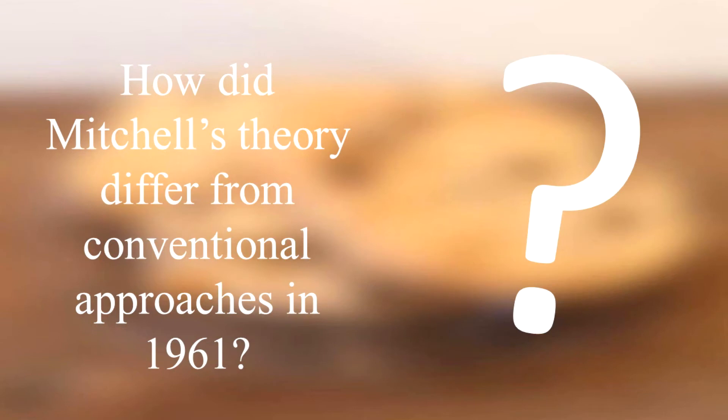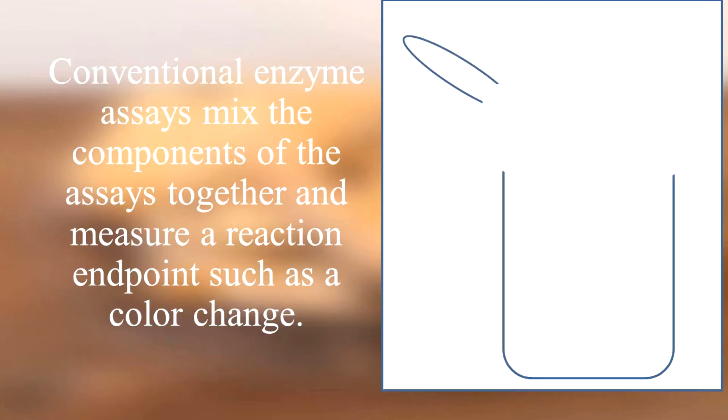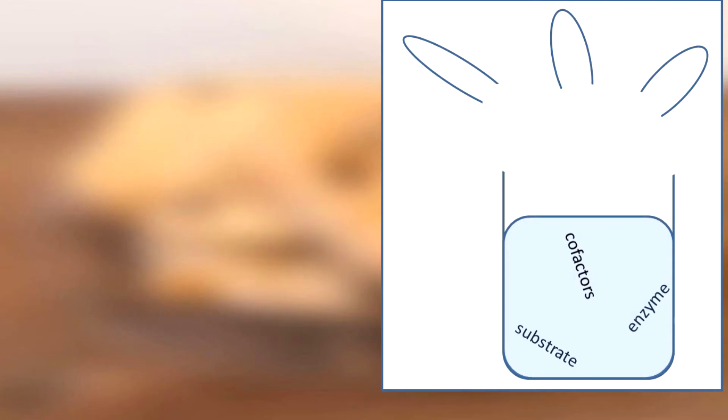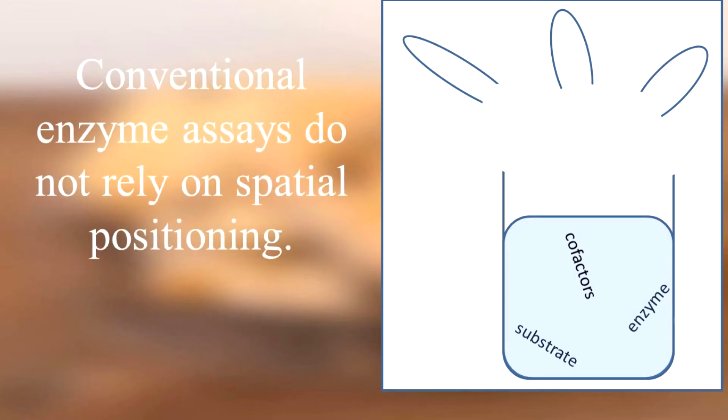How did Mitchell's theory differ from conventional approaches in 1961? Conventional enzyme assays mix the components of the assays together. They put in the substrate, they put in the enzyme, they put in the cofactors, and if they work, there is a reaction such as a color change. Conventional assays don't rely upon the spatial positioning that Mitchell points to in his introduction.